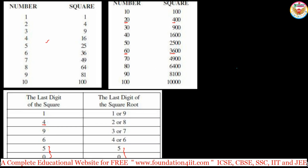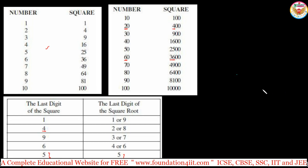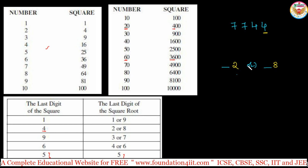Now let's see how to apply this instant calculation. Find the square root of 7744. This is a perfect square. First step: look at the units place — it's 4. So the square root must end in either 2 or 8. The units place is fixed as either 2 or 8.